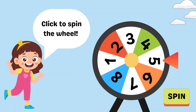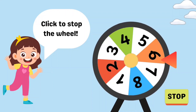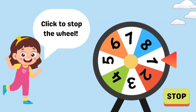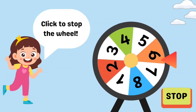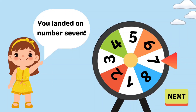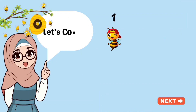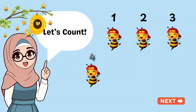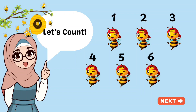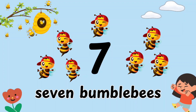Click to spin the wheel. Now click to stop the wheel. Wow! You landed on number 7. Let's count: 1, 2, 3, 4, 5, 6, 7. Seven bumblebees!